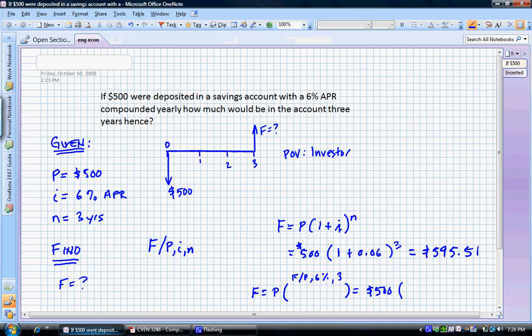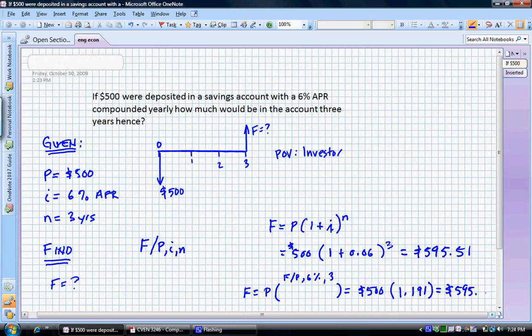So, let's go back, plug in 1.191, and that gives us an answer of $595.50. You'll see, it's pretty close to the first one. The 1 cent difference there is due to the rounding in the interest tables. So, both answers are correct.